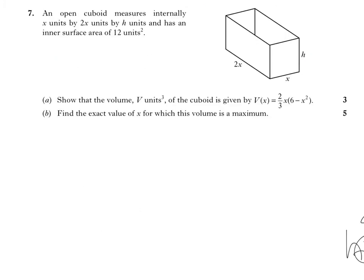Part B says find the exact value of x for which this volume is a maximum. That's now thinking about optimization and maximum, I'm thinking about stationary points and proving the stationary point as maximum, either by double derivative or nature table. So first of all, I'm going to prepare to differentiate by multiplying out the brackets. So 2/3 x times 6 is going to give me 4x.